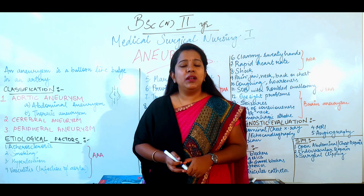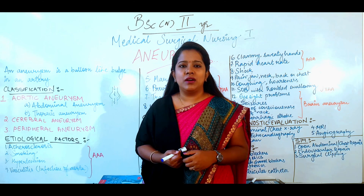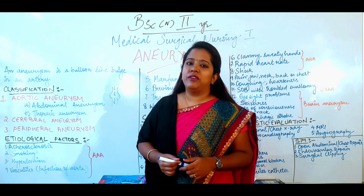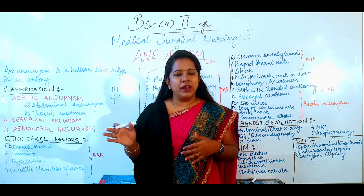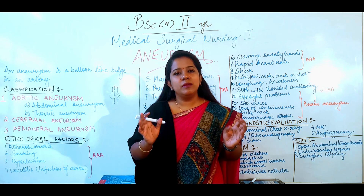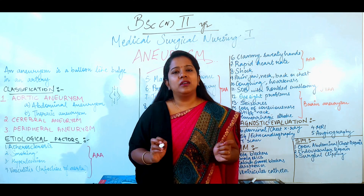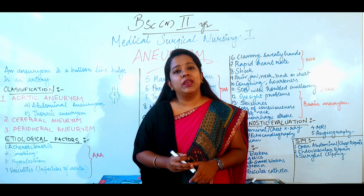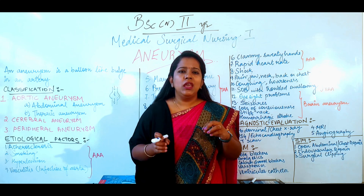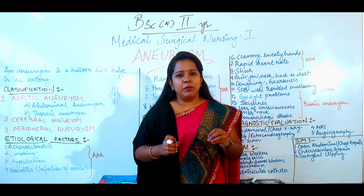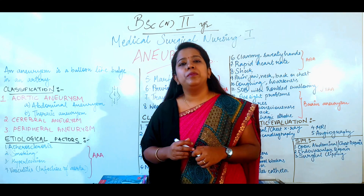Next we will talk about cerebral aneurysm. Cerebral aneurysm is when a bulge forms in the arteries of the brain. The next type is peripheral aneurysm — if there is an aneurysm in any other part of the body, those types are called peripheral aneurysm. Peripheral aneurysm's incidence is mainly in the popliteal region, femoral region, popliteal artery, femoral artery, and carotid artery — these are the main sites where we see peripheral aneurysm.